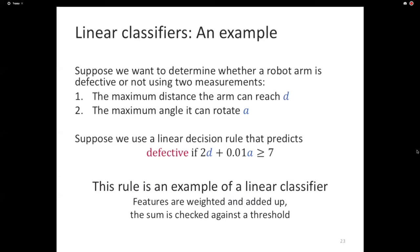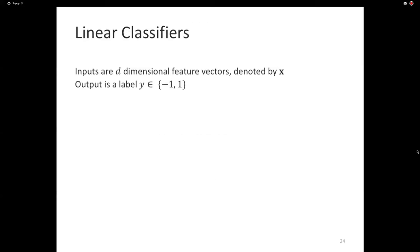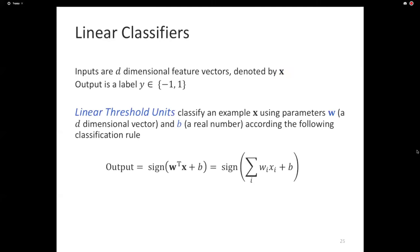In the literature, the threshold is called a bias term. And you check if the weighted features, when added up, cross the threshold or not. If they cross the threshold, you have one label. If they don't cross the threshold, you have the other label. This is a general sort of a sketch for all linear classifiers. The features are weighted. They are added up. The sum is checked against the threshold. And based on whether the threshold is crossed or not, you get two labels. Let's define this more generally. Inputs are d-dimensional feature vectors. We are no longer going to think of inputs as emails or images. Let's say that somebody did the feature extraction for us, and we have d features.